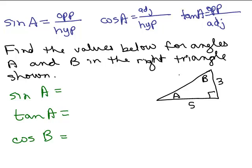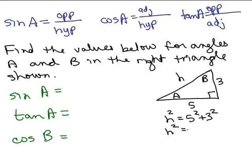Let's call the hypotenuse H and use the Pythagorean Theorem. H squared equals one leg squared plus the other leg squared: 5 squared plus 3 squared. That's 25 plus 9, so H squared equals 34, meaning H equals the square root of 34. So this side is the square root of 34.